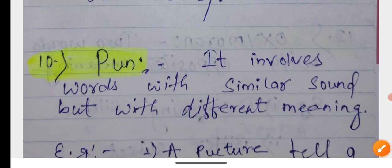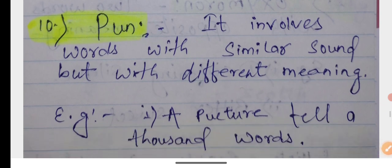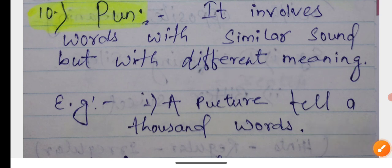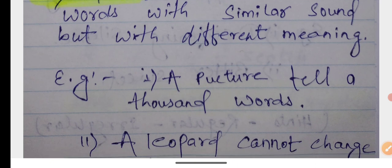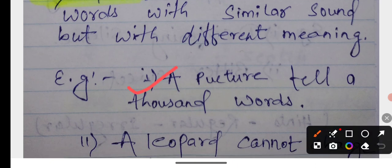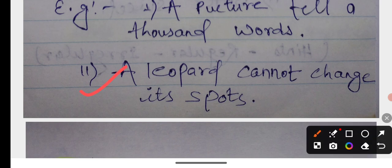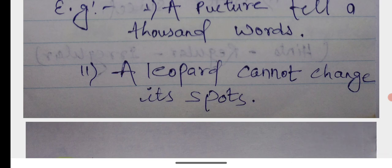Pun. It involves words with similar sounds but with different meanings. Sounds the same but the meaning is different. That is known as pun. For example, a picture tells a thousand words. A leopard cannot change its spots.